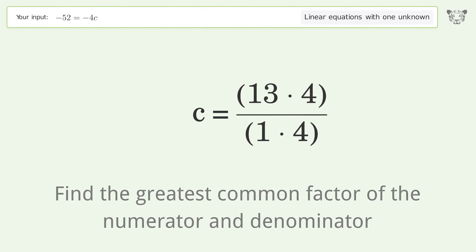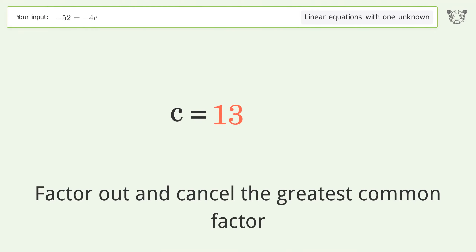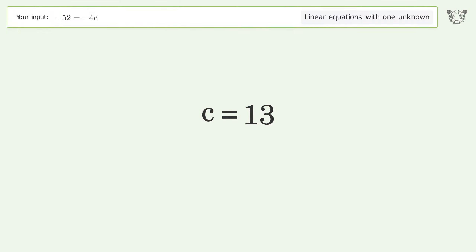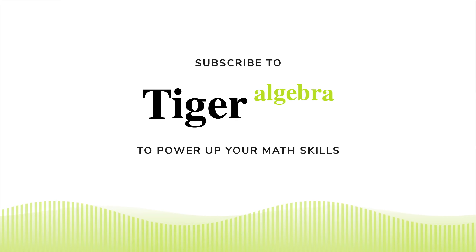Find the greatest common factor of the numerator and denominator. Factor out and cancel the greatest common factor. The final result is c equals 13.